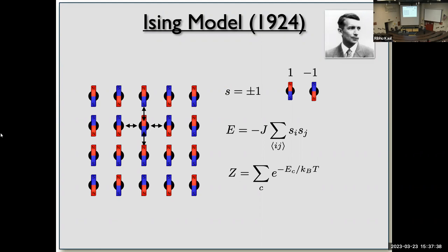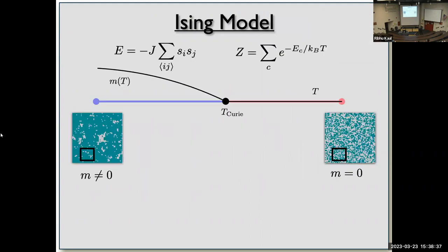Neighboring spins interact locally and like to align, giving an energy of the form −J Σ σ_i σ_j. The spins like to point parallel — both up or both down. This whole system with this energy function is then placed in contact with a thermal reservoir and studied with statistical mechanics via the partition function. The study of this model has led to some of the most profound ideas in theoretical physics of the 20th century.